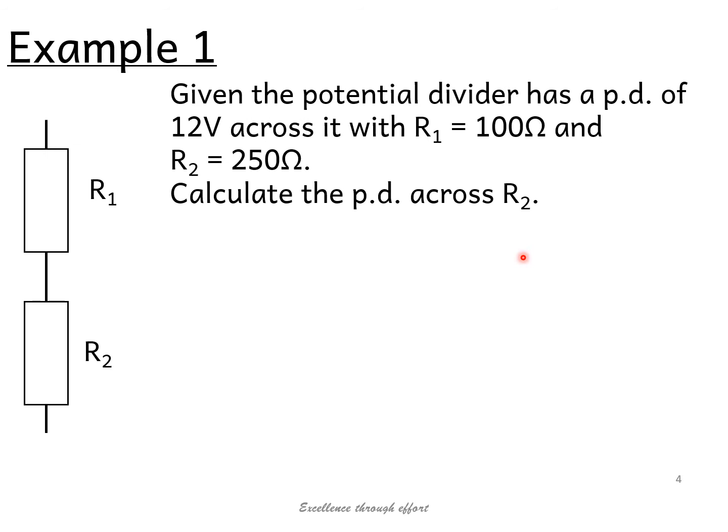Example one: given the potential divider has a potential difference of 12 volts across it with R1 as 100 ohms and R2 250 ohms, calculate the potential difference across R2. Pause the video and have a go if you're confident with what to do. If not, I will take you through the solutions now. Before I take you through the solutions, a few things I want to just point out. Remember, the voltage dividers are sometimes drawn with a line at the top here and at the bottom, and they tell you what the voltage is.